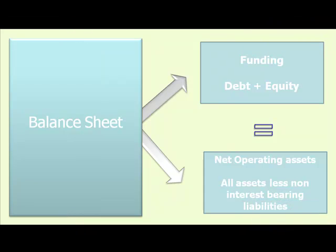The first step is to identify the funding part of our business, which gives us the ability to identify the relationship between debt and equity. When you look at the balance sheet this way and understand what the debt component and the equity component are, you can also understand the personality of the business — is this a high-risk environment or a more conservative environment?